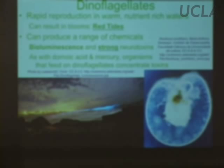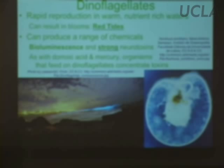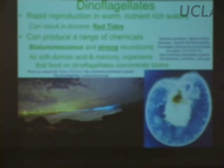Dinoflagellates are particularly common in warm water and can take advantage of nutrient-rich water. When water gets warm and has lots of nutrients — particularly near nutrient-rich land runoff — they can grow to such concentrations that they actually turn the water red, forming what's called a red tide. Much like diatoms, when they grow in high densities they can actually create toxins that concentrate up food chains.